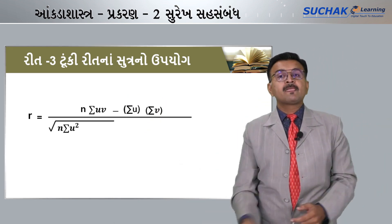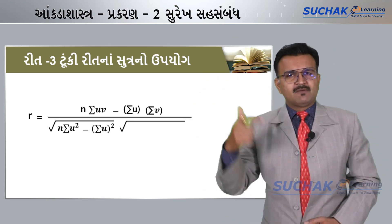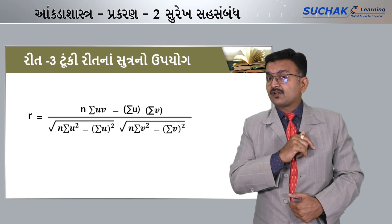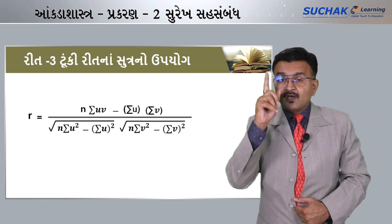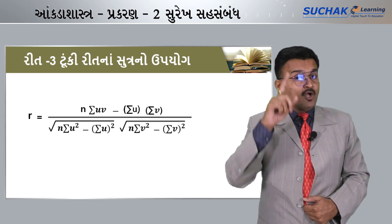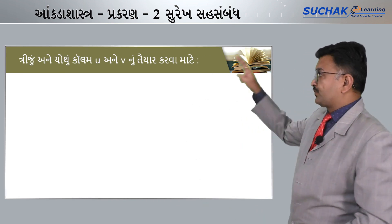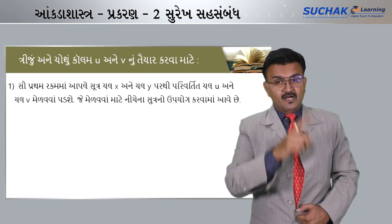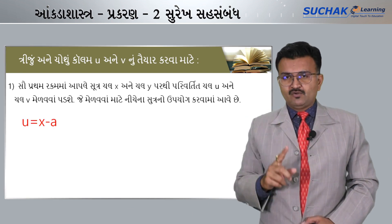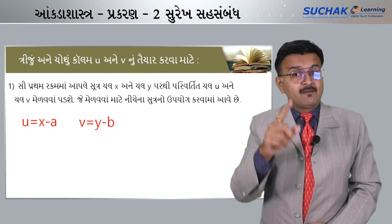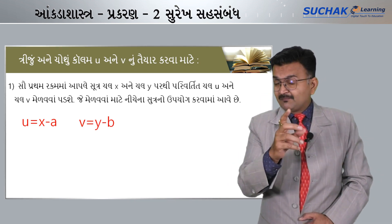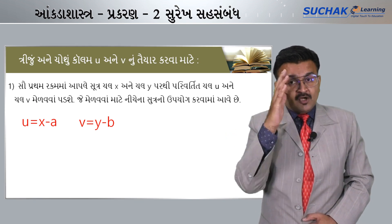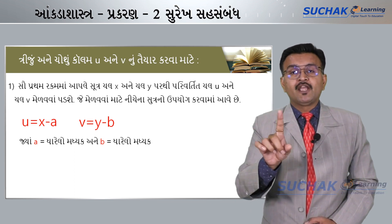આ સૂત્રનો ઉપ્યોગ કરવા માટે તમારે U અને V મેળવવા પડશે. તો મિત્રો, હવે column બનાવીશું — U અને V મેળવવા માટે. Y માંથી B બાદ કરવાનો, જ્યાં V = Y − B. તમને પ્રશ્ન થશે કે A અને B ક્યાંથી લેવા — A અને B એટલે મધ્યક (mean).